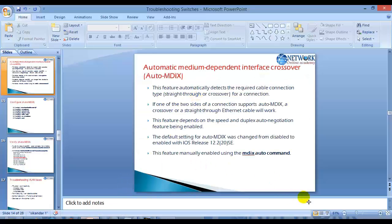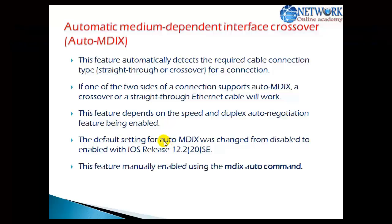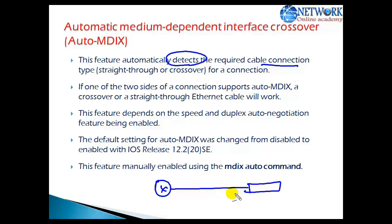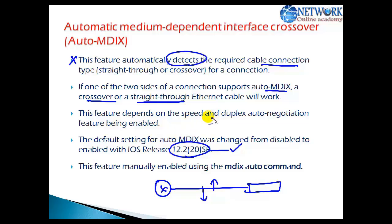There is a feature called Auto-MDIX — Auto Medium Dependent Interface Crossover. When enabled, this feature automatically detects the required cable connection type, whether straight-through or crossover. So connecting a router to a switch no longer requires a straight cable — you can use any type of cable and it will be automatically detected. Note that this feature is not enabled by default, and it only works if speed and duplex settings are set to auto negotiation.